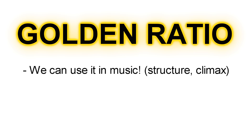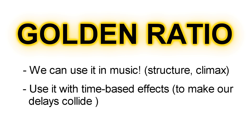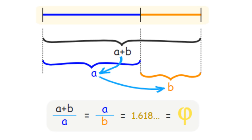We could use it on the structure of our song to know where the optimal place is to put our climax, but we can also use it with time so we can set up the time of both our delays to collide with each other and use the golden ratio to get the most perfect collision place for our delays to happen. The actual formula of the golden ratio is: (a + b) / a = a / b, and the actual value is 1.618.